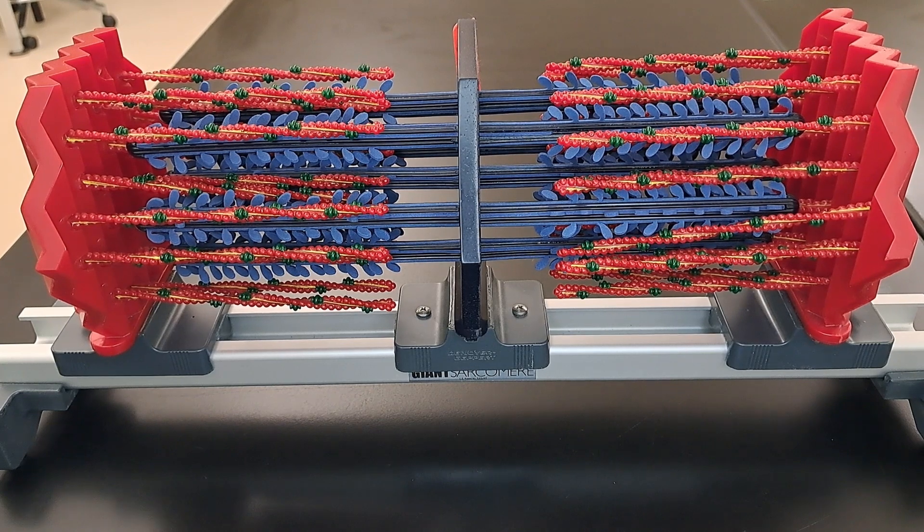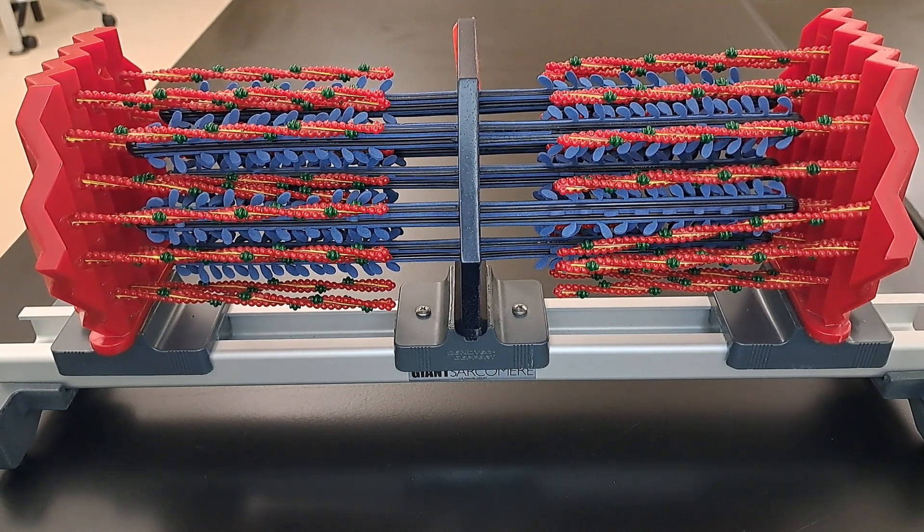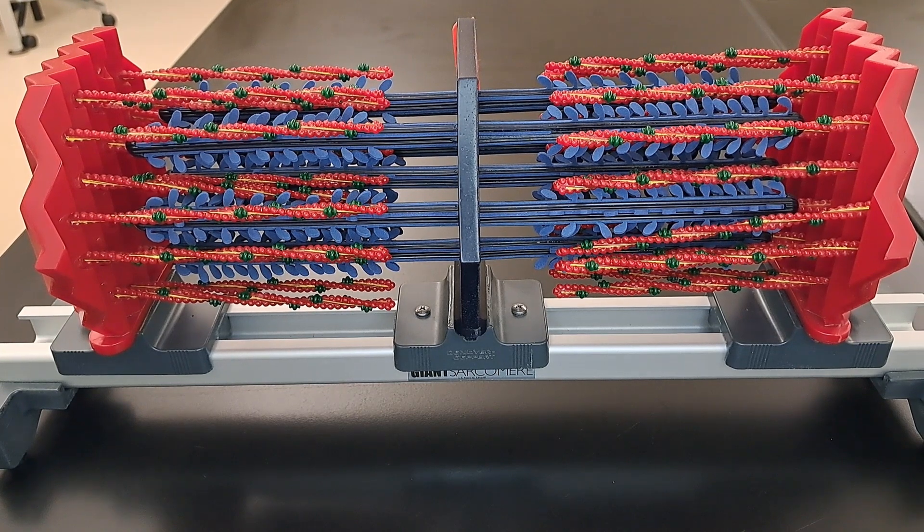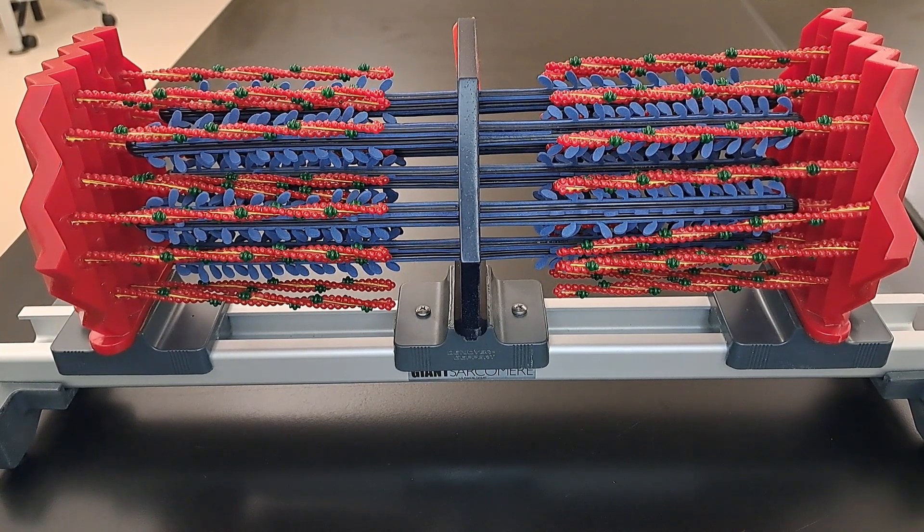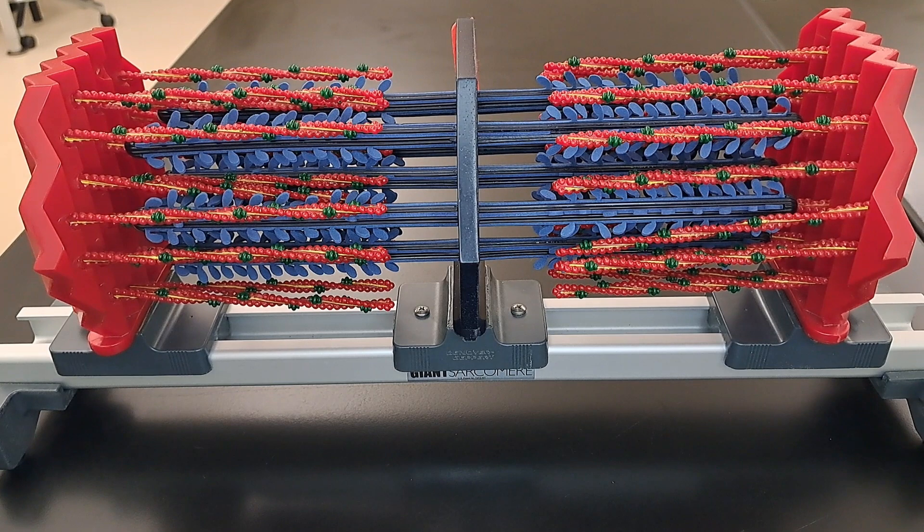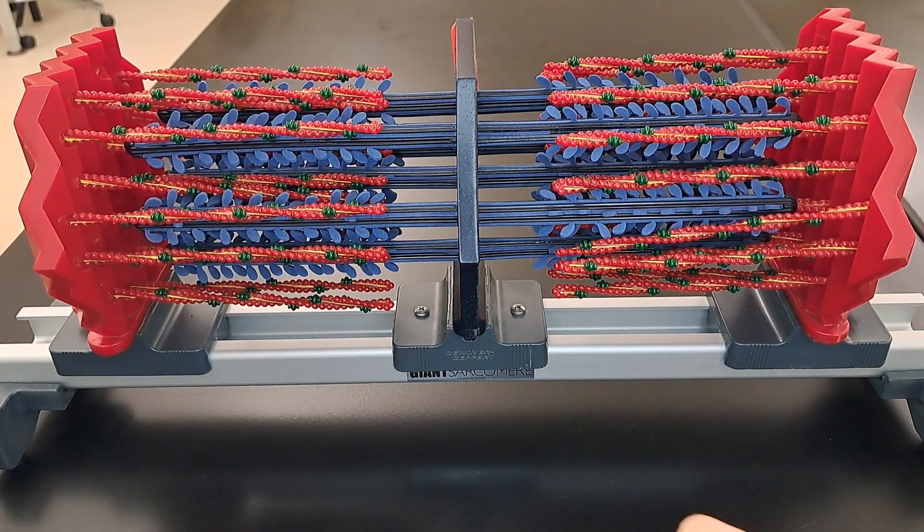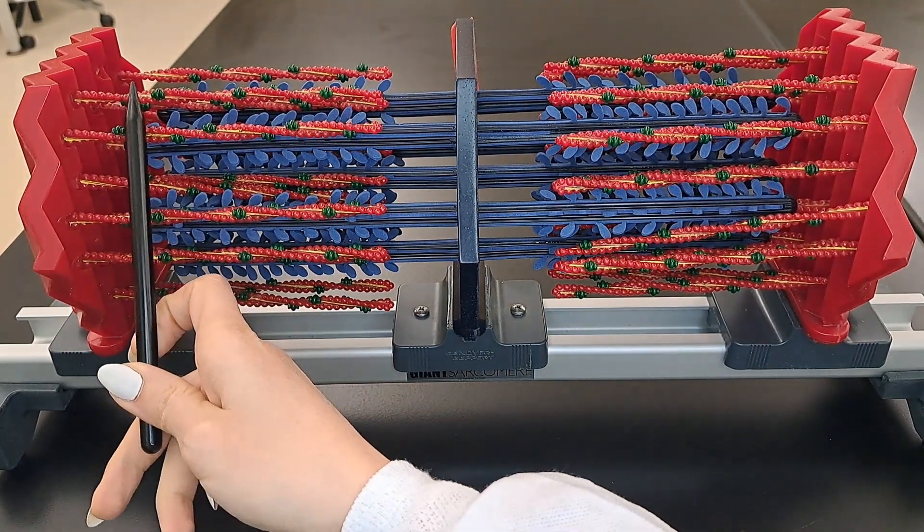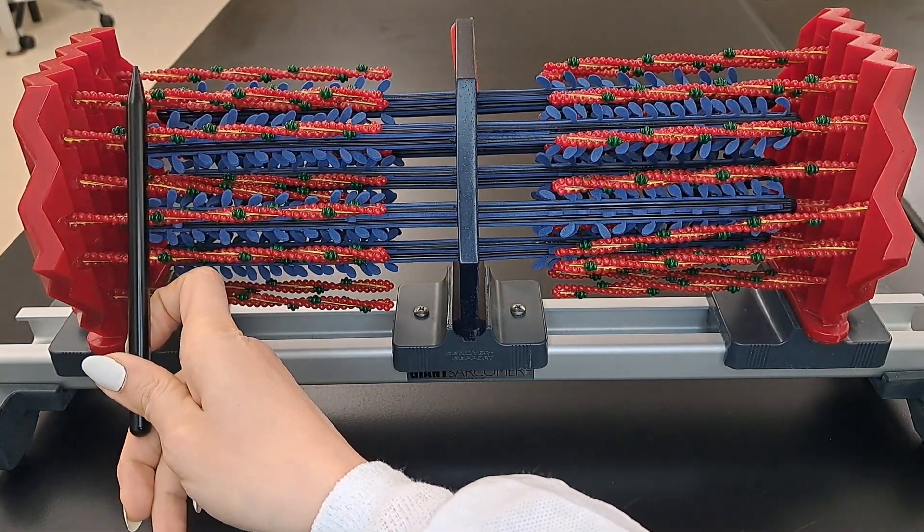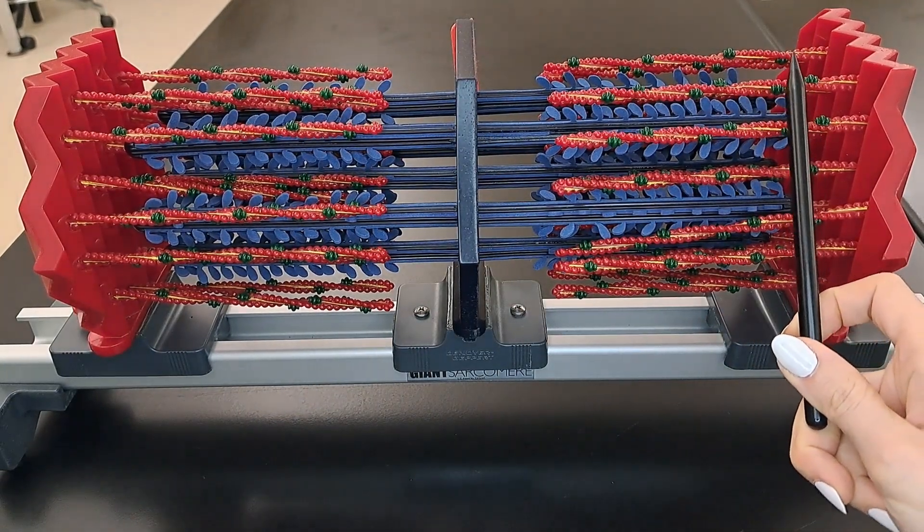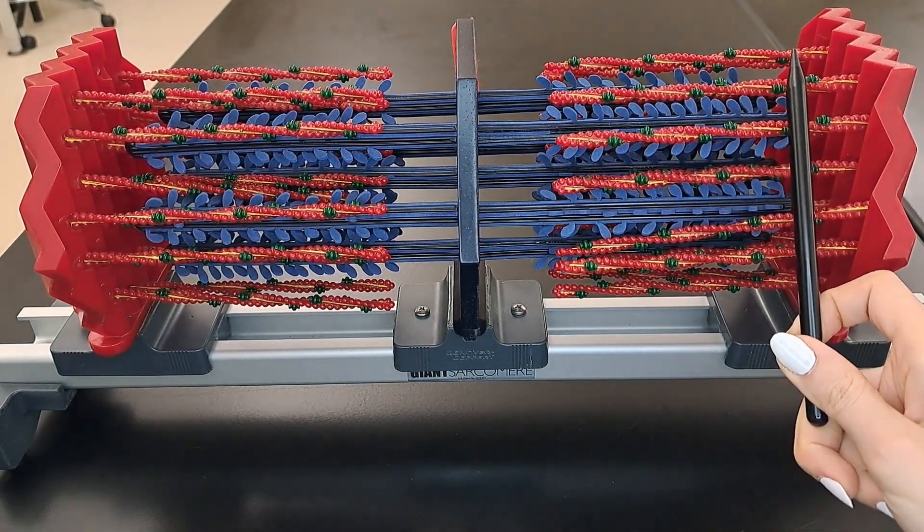The skeletal muscle appears striated under the microscope, which makes it unique from the smooth muscle. The reason why it appears striated is because of the A band and the I band. The A band extends from this point right here to this point. That is the A band, the darker band.